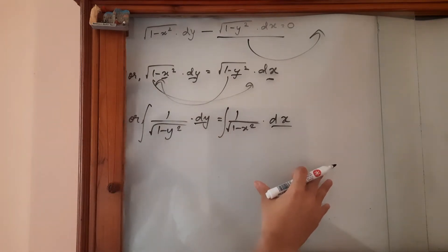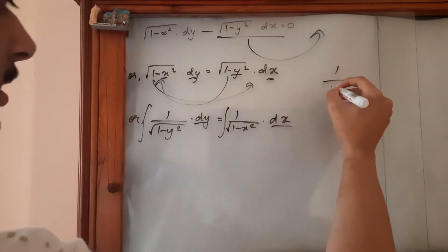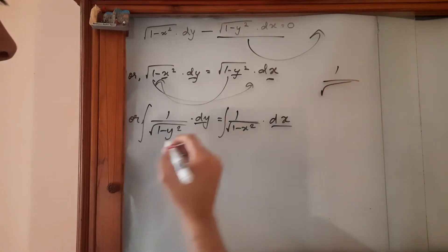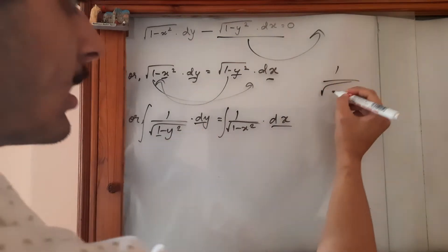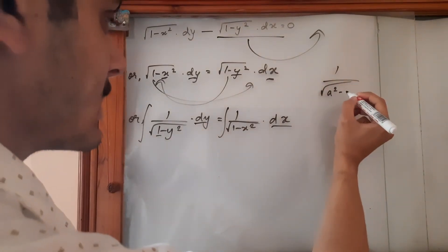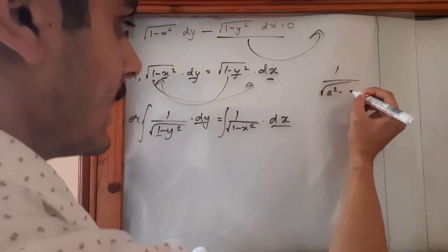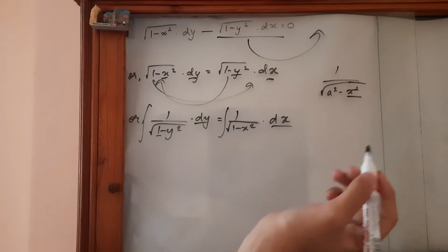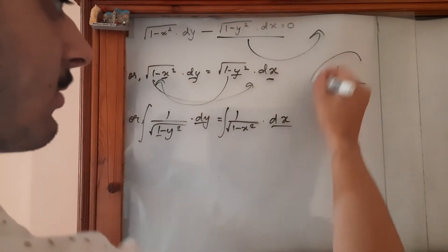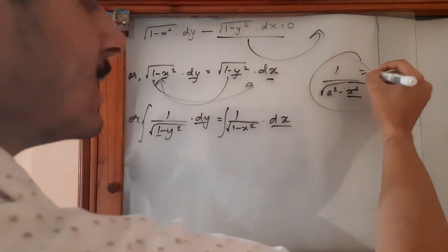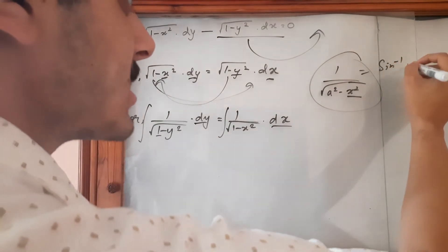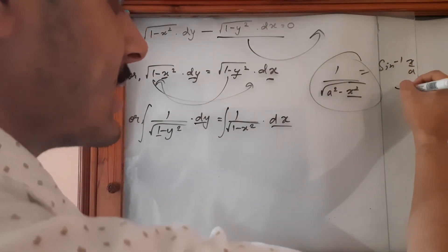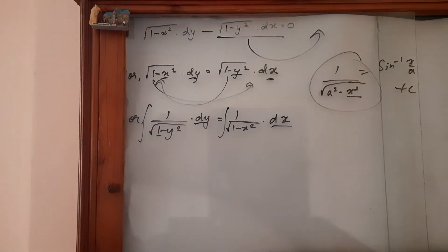So if we do this, then we can find a solution. So I hope that you've learned that 1 over root under, let's consider this to be a constant a squared minus, let's say x squared, x squared as the variable over here. Even though we have y, this is different, this is just a formula. Then the answer would be sin inverse x over a plus c. I hope you know this formula.